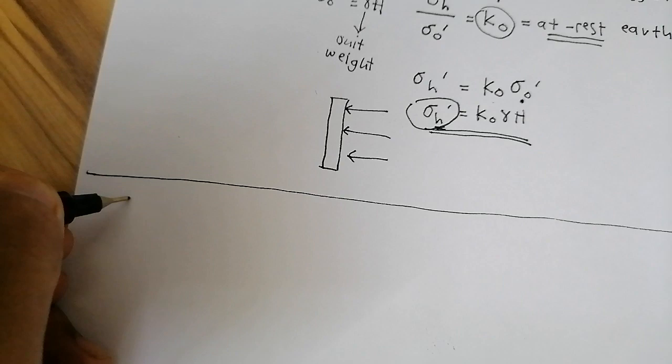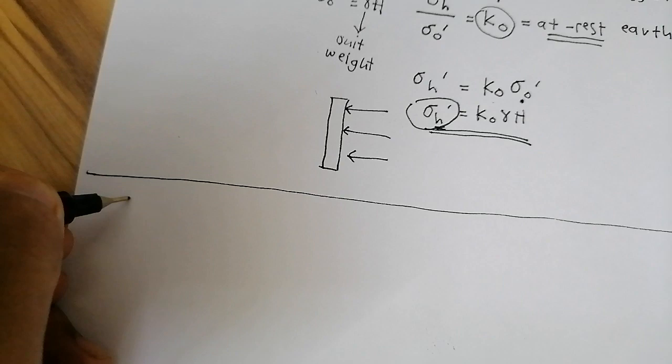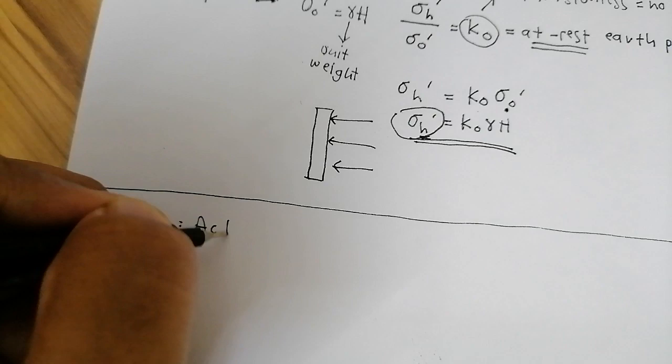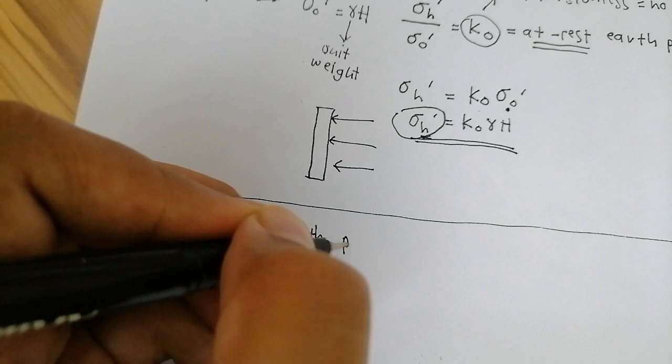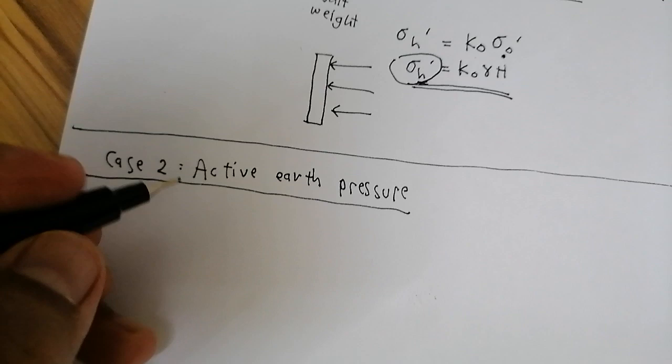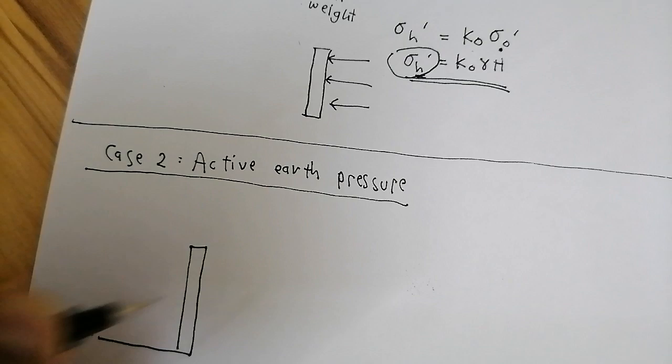Now let's move to case two: active earth pressure. I'm going to draw the same retaining wall here, supporting the same soil mass.